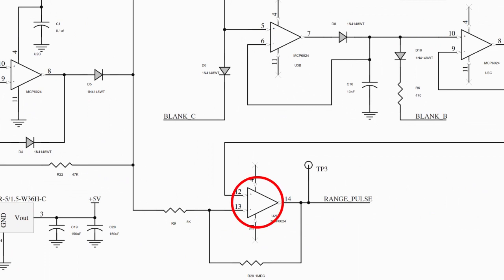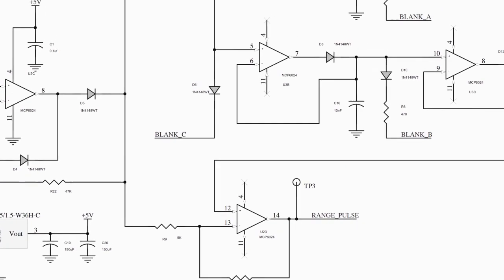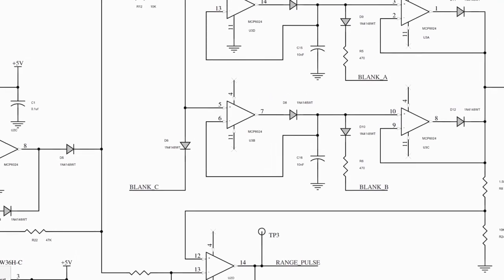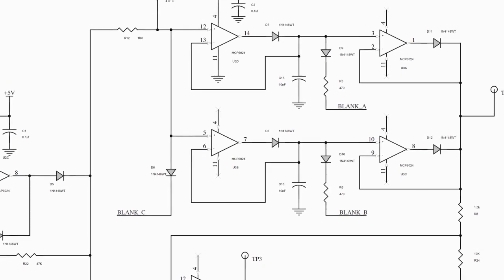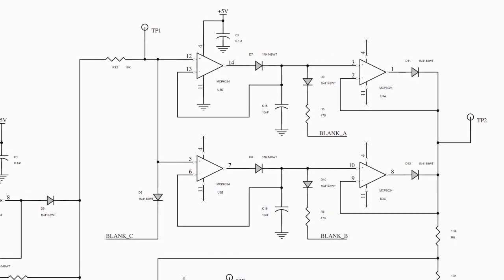U2C forms an active half-wave rectifier which effectively slices the waveform in two, leaving us only with pulses going one direction which is much easier to contend with. U2D forms a simple comparator which is used to create the range pulse. It basically takes the incoming analog signal and compares it against a reference voltage and triggers whenever the signal exceeds the reference voltage.